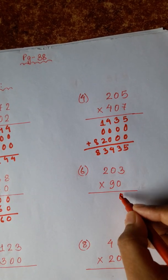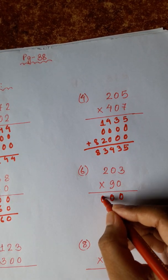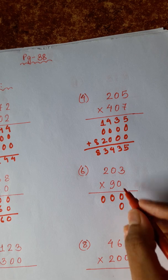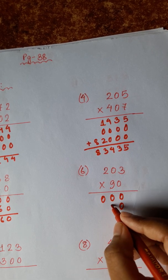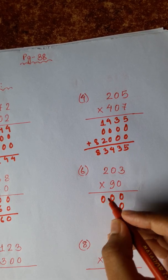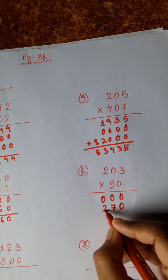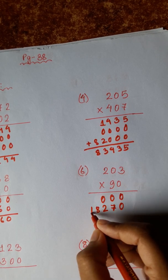3 zeros are 0, 0 zeros are 0, 2 zeros are 0. 3 nines are 27, 2 nines are 0 plus 2 is 2. 9 twos are 18.